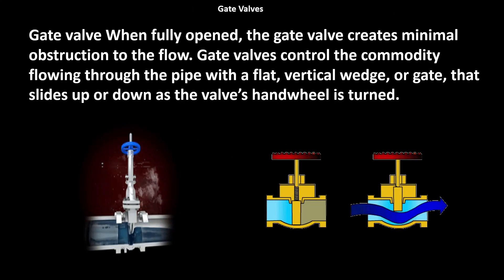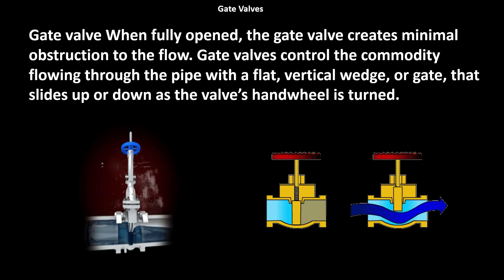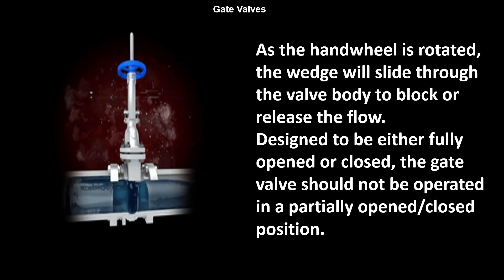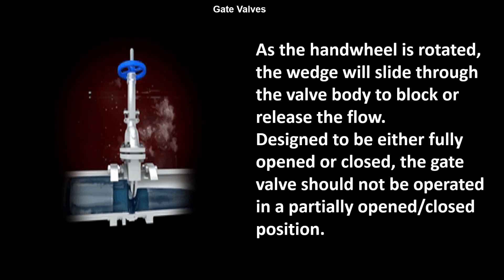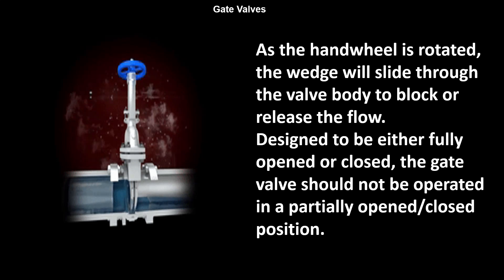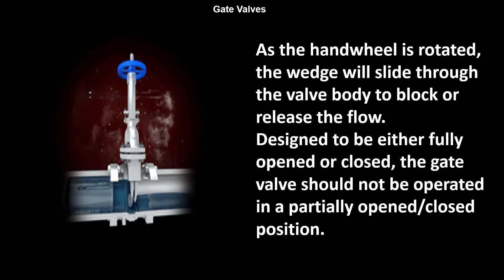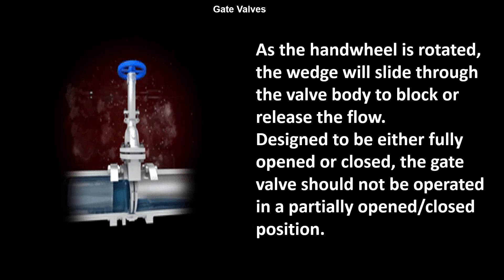When fully open, the gate valve creates minimal obstruction to the flow. The gate valve controls the commodity flowing through the pipe with a flat vertical wedge or gate that slides up or down as the valve hand wheel turns. As the hand wheel is rotated, the wedge slides through the valve body to block or allow the flow. Designed to be either fully open or closed, the gate valve should not be operated in a partially open or closed position.